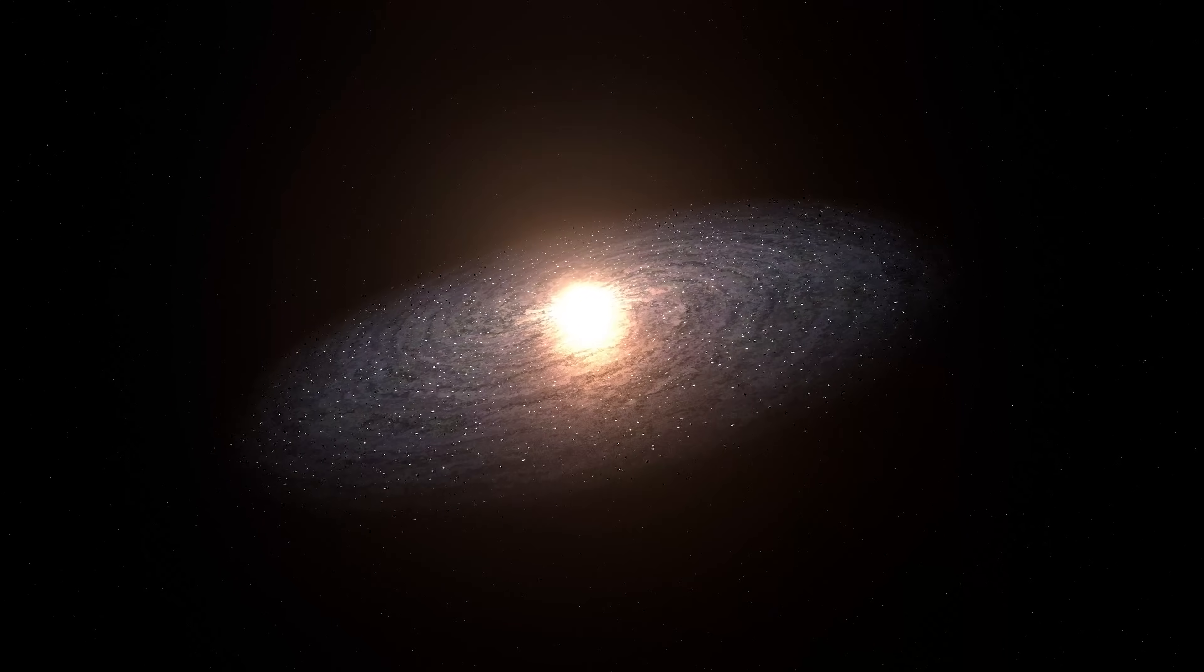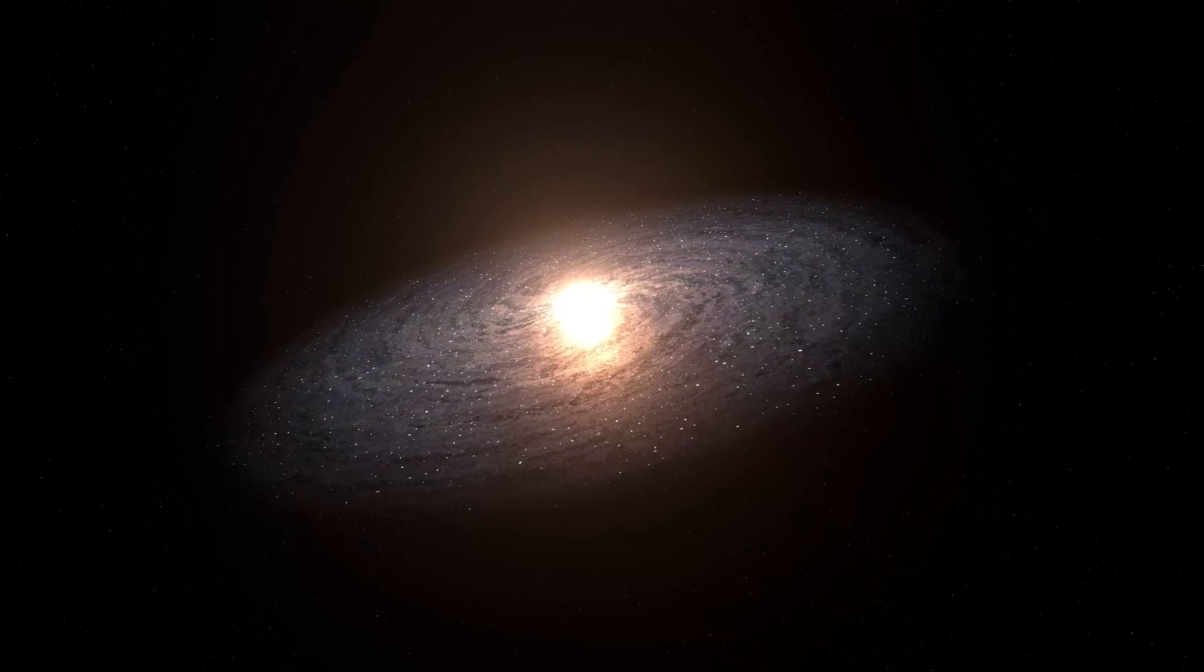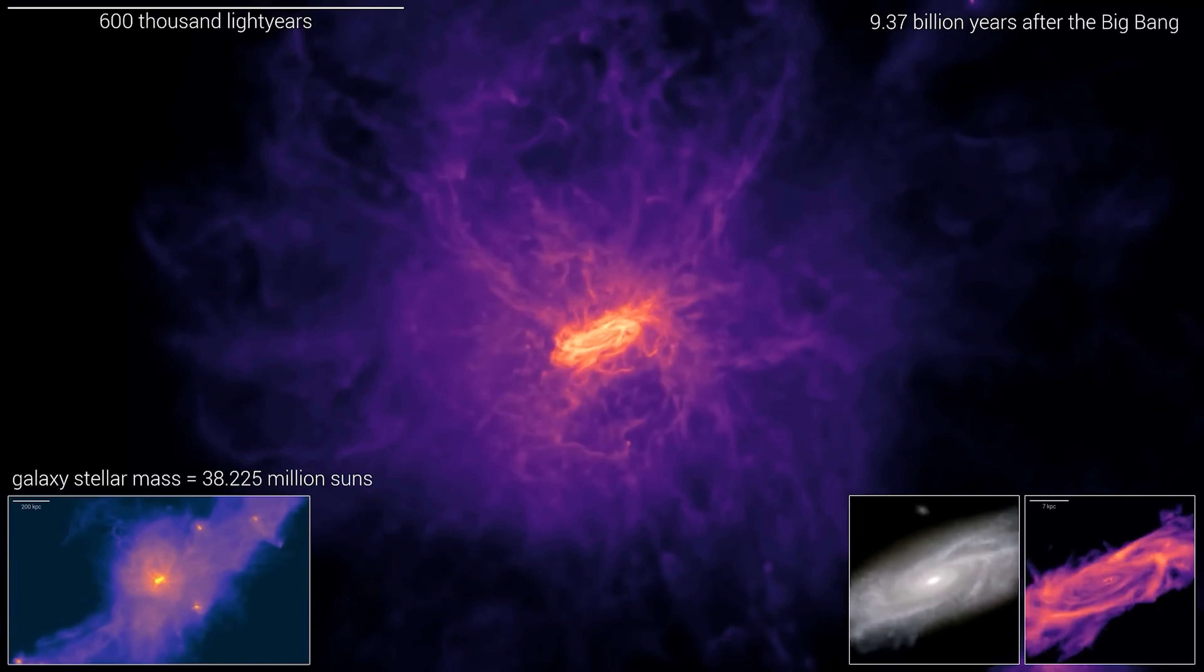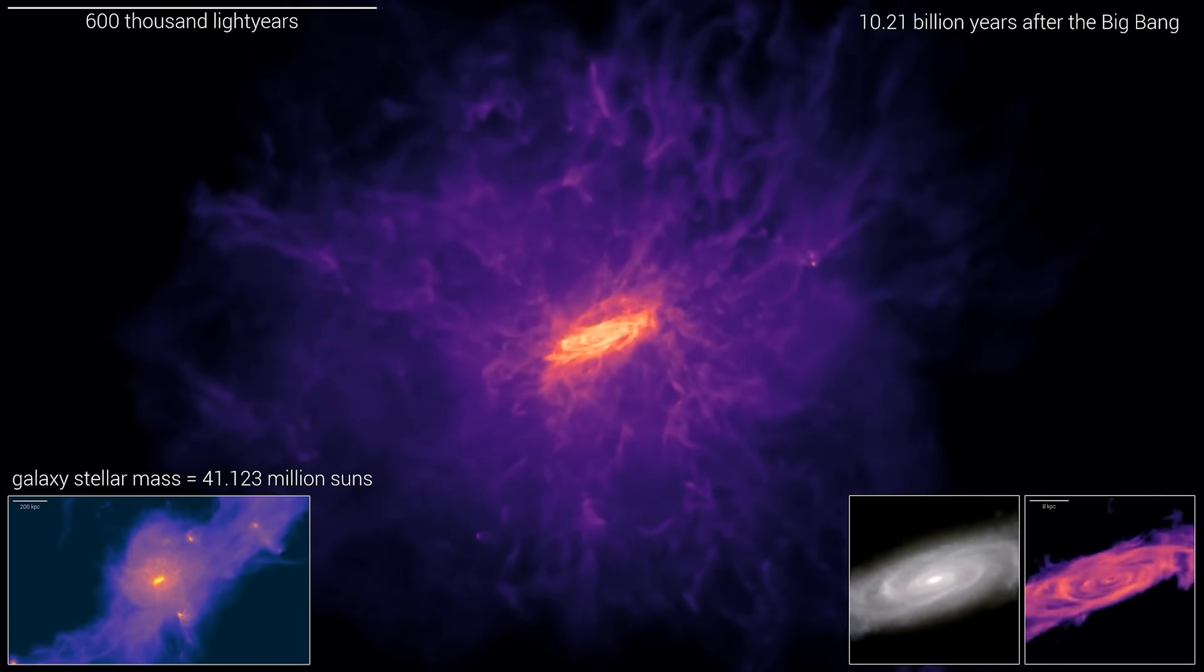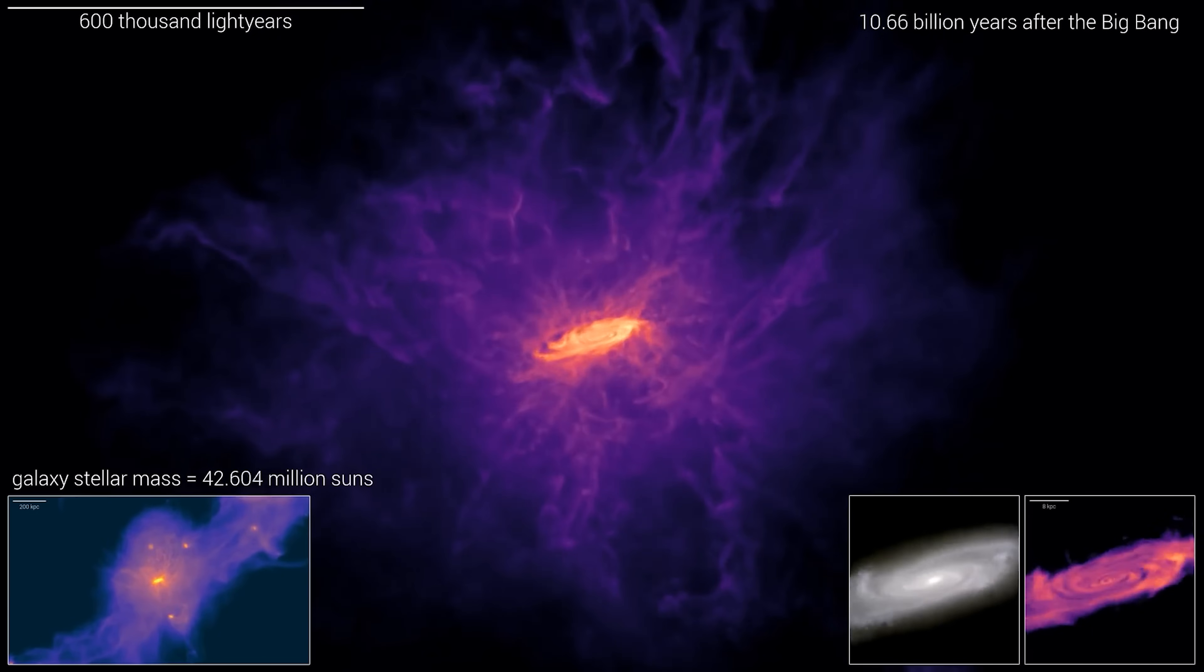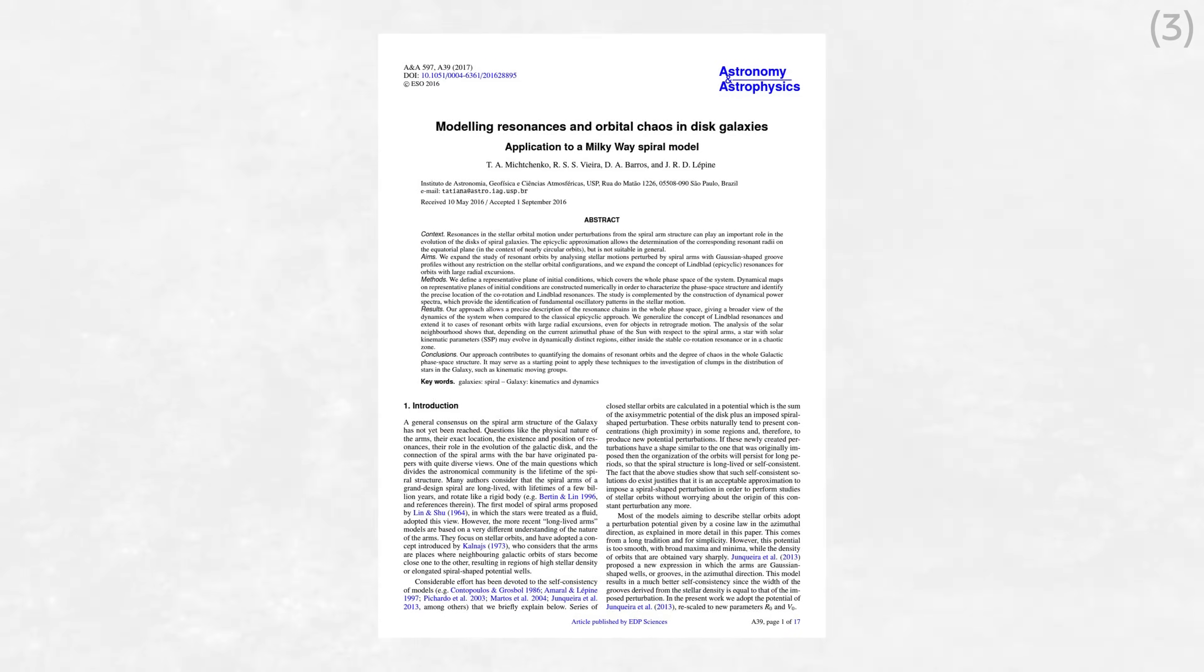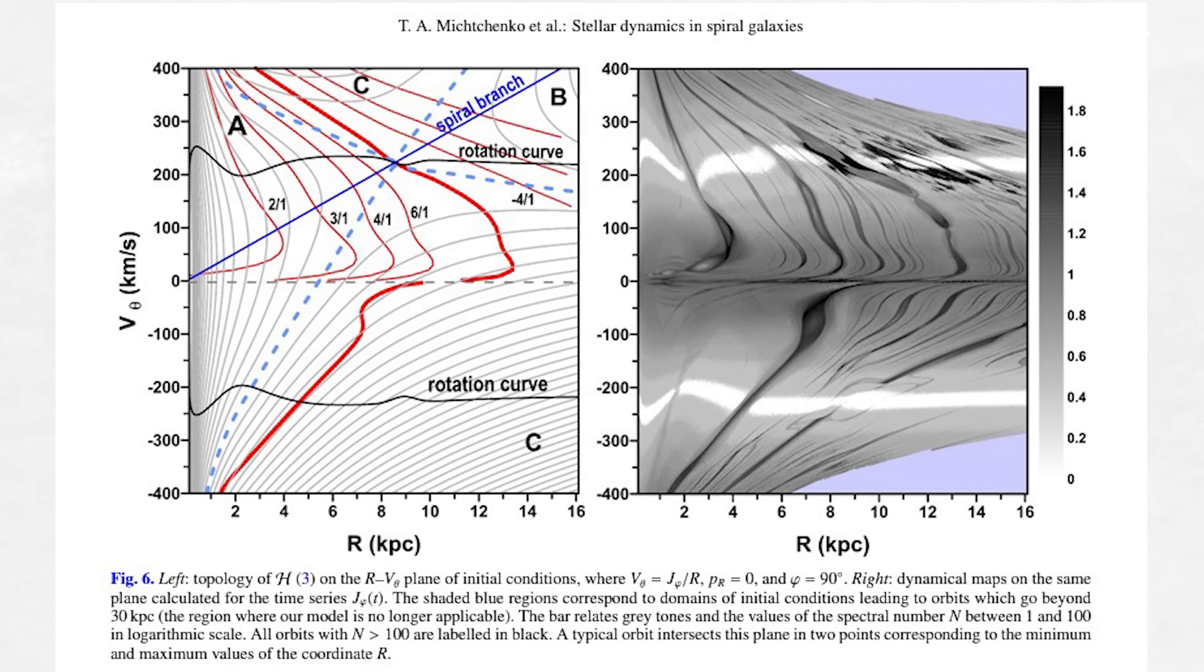We treat the galaxy as being a smoothly varying continuum and can follow the trajectory of an individual fluid element, or even an individual star, or the evolution of the whole system over time. And we observe behaviors that we typically associate with fluid flows on Earth, such as chaos. The evolution of a single star through a galaxy, especially in configurations like a spiral arm, can be turbulent and chaotic.